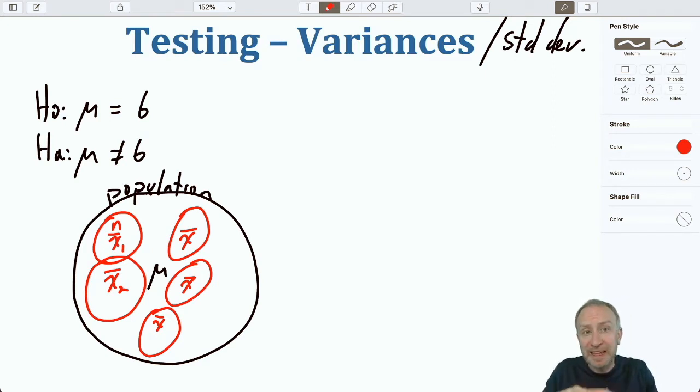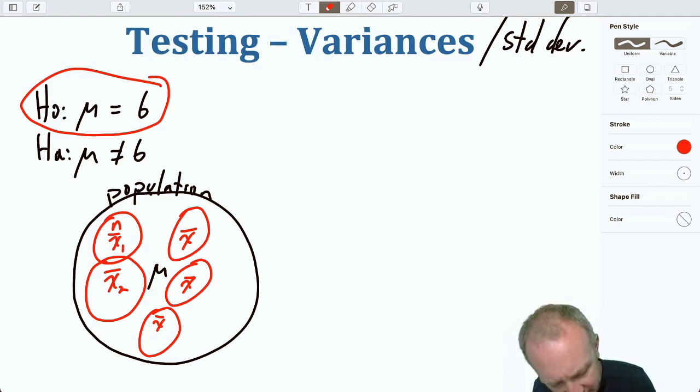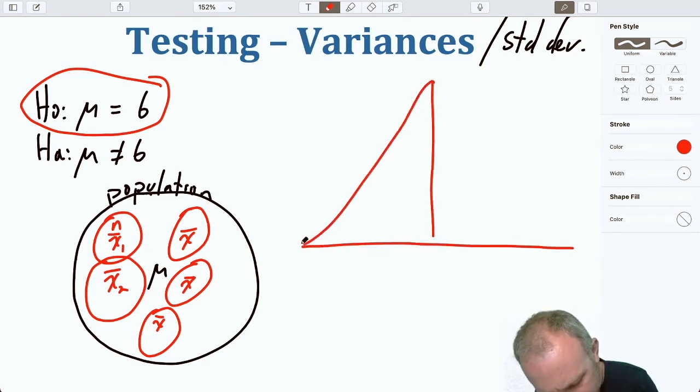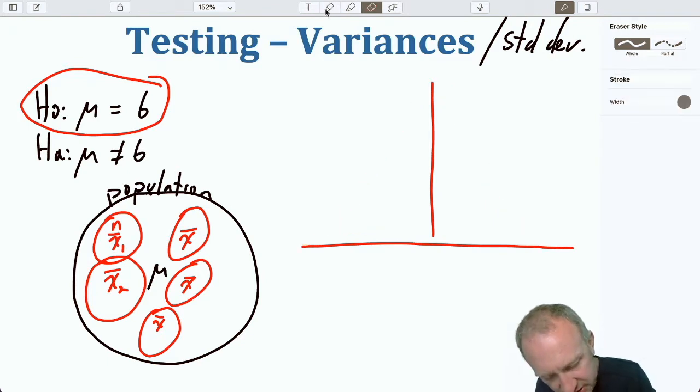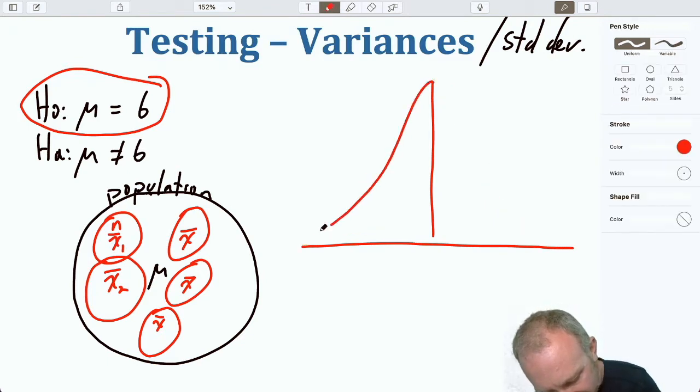Now think about what it meant if, let's say for sake of discussion, our evidence supported the null hypothesis. So the null hypothesis is that the average is 6. Let's say we have a distribution here and we know that it has an average of 6.